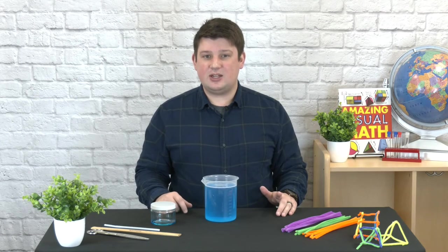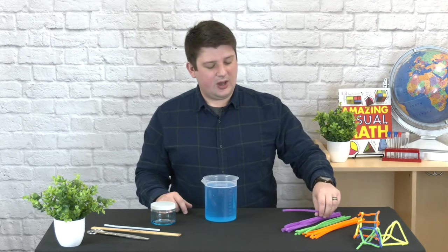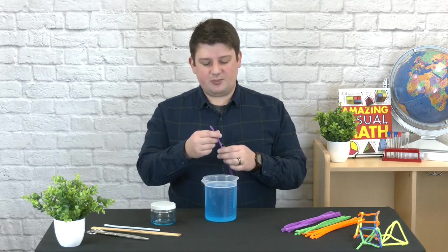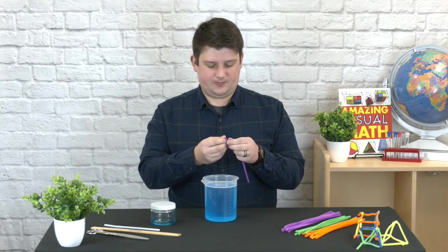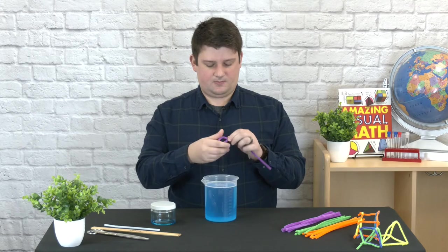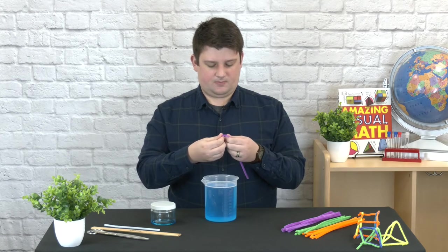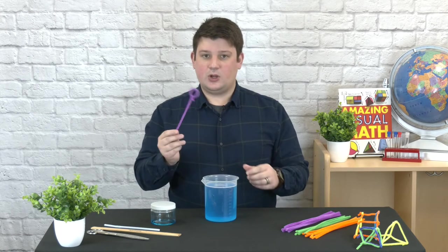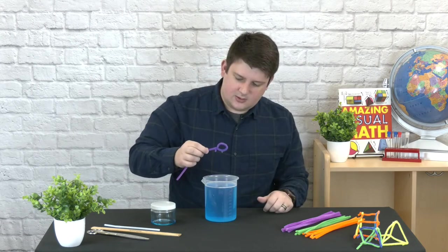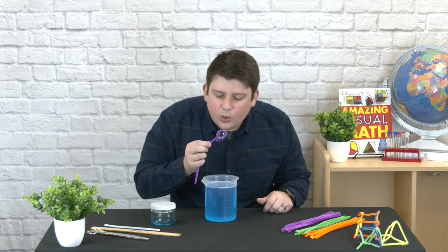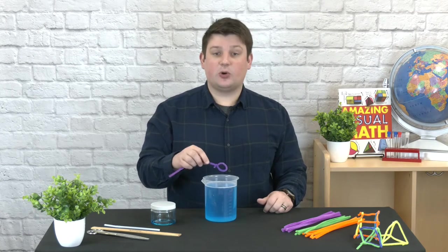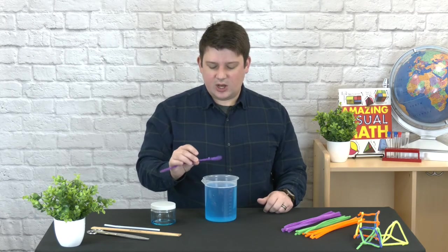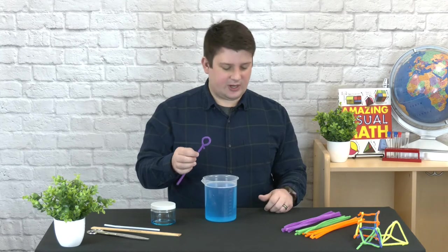Now that we have our bubble solution made, let's see if we can make any different kinds of shapes. Let's just start off with a pipe cleaner and turn it into a normal circle. Okay, so that made a circle or spherical bubble. Let's see if we can make a different kind of shape.